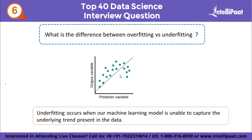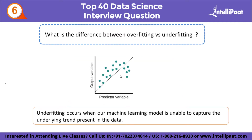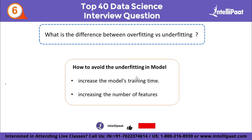Underfitting occurs when the machine learning model is unable to capture the underlying trend. Stopping training early to avoid overfitting can cause the model to learn insufficiently, failing to find the best fit. Underfitting reduces accuracy and produces unreliable predictions. An underfitted model has high bias and low variance. As seen in the linear regression output, the model is unable to capture the data points in the plot. To avoid underfitting: increase the model training time and increase the number of features.